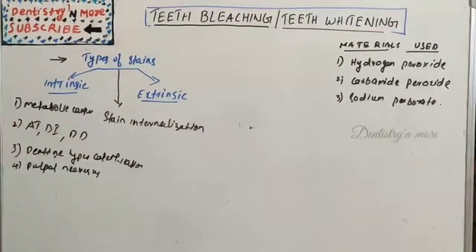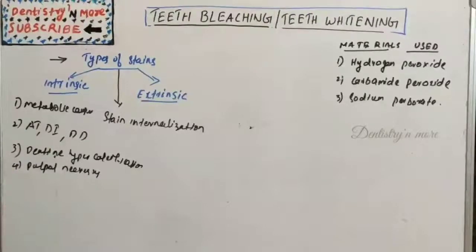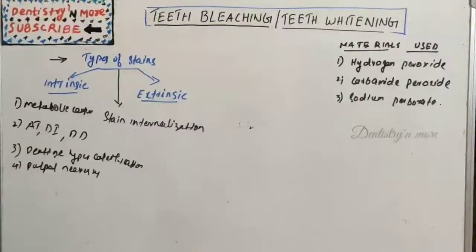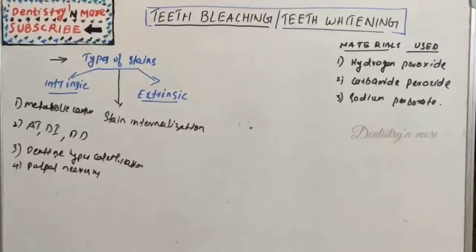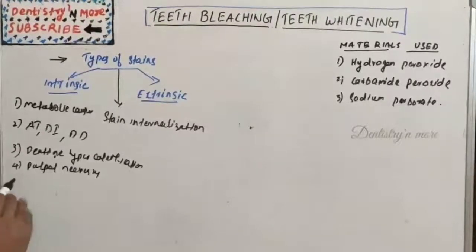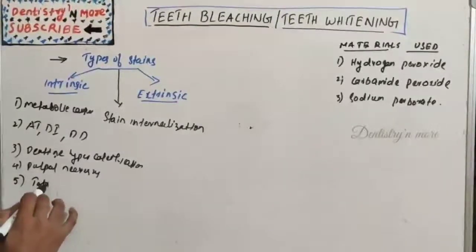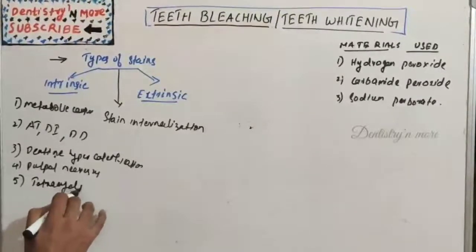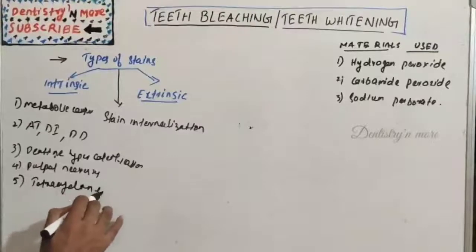Iatrogenic discoloration can be caused by amalgam fillings, pins and post placement, various obturating materials, composite materials, intracanal medicaments, and pulp tissue remnants. Medication-related staining includes tetracycline staining, which results from the use of tetracycline during pregnancy.